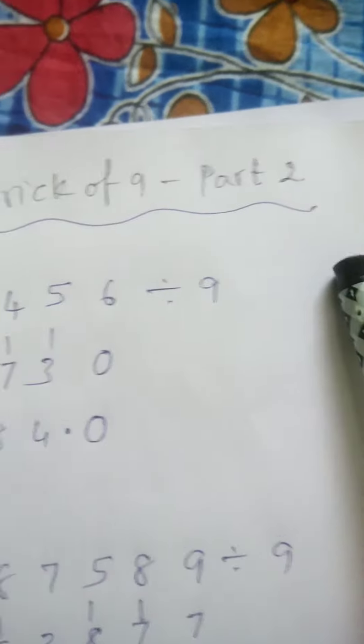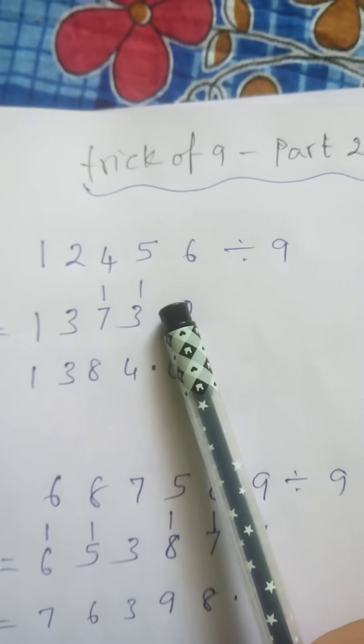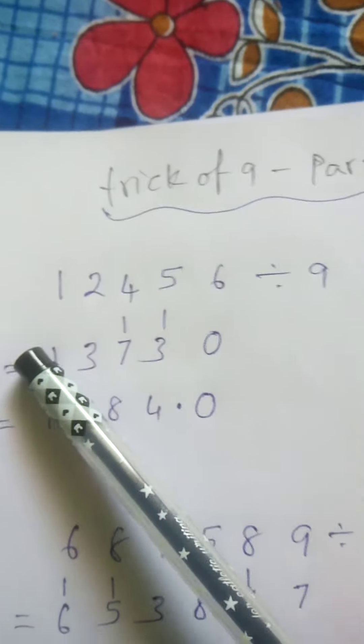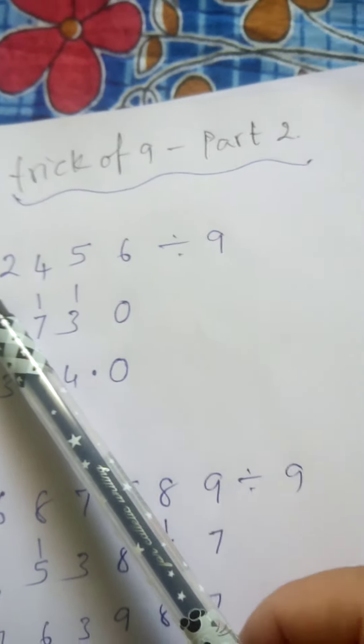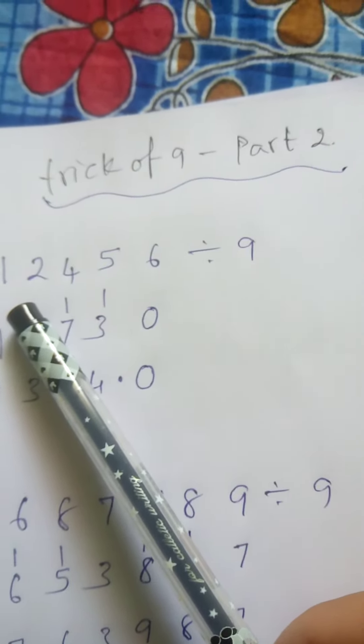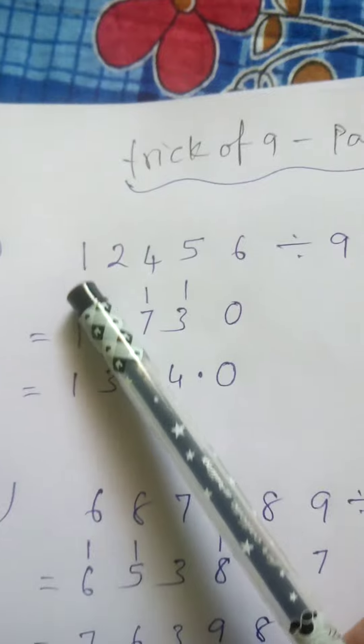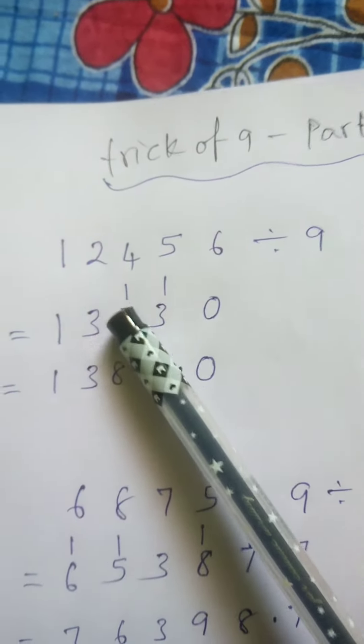Here is trick of 9, part 2. What you have to do is the same thing we did in part 1. Here we'll see something different. Write 1 as it is. 1 plus 2 is 3.